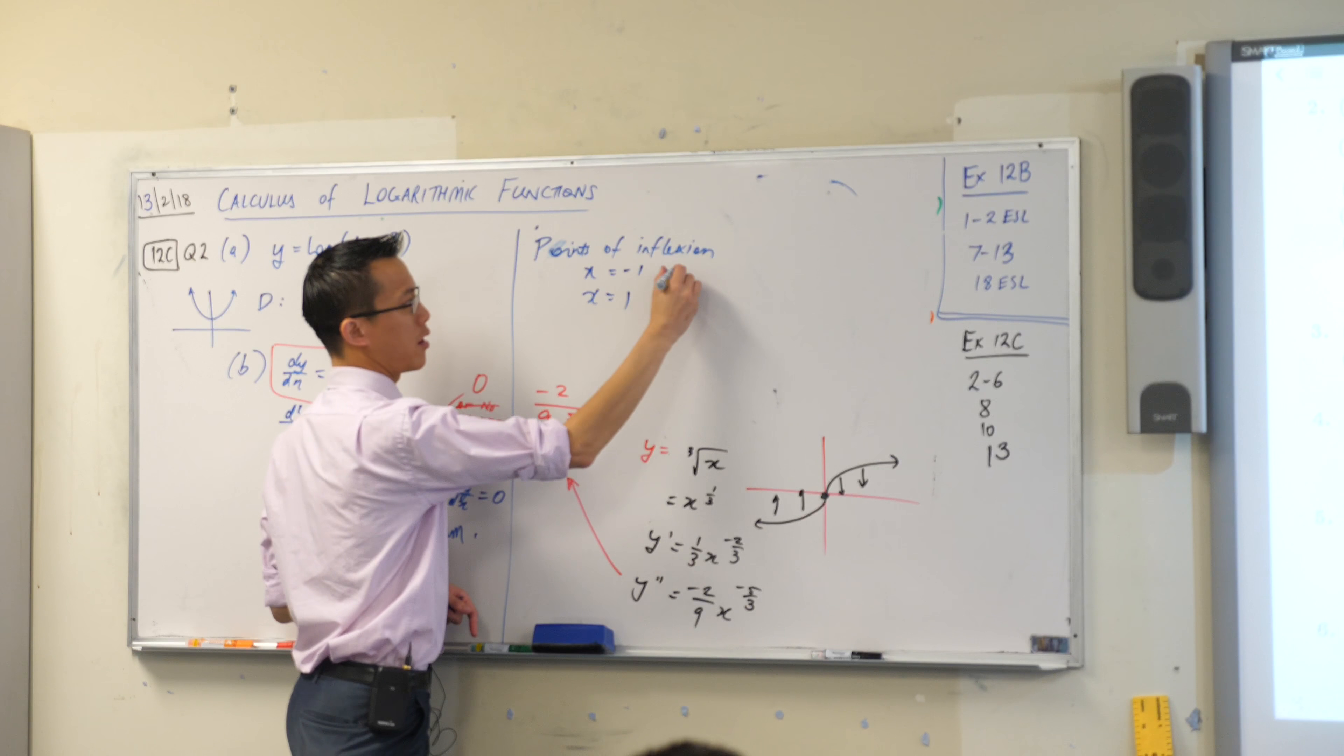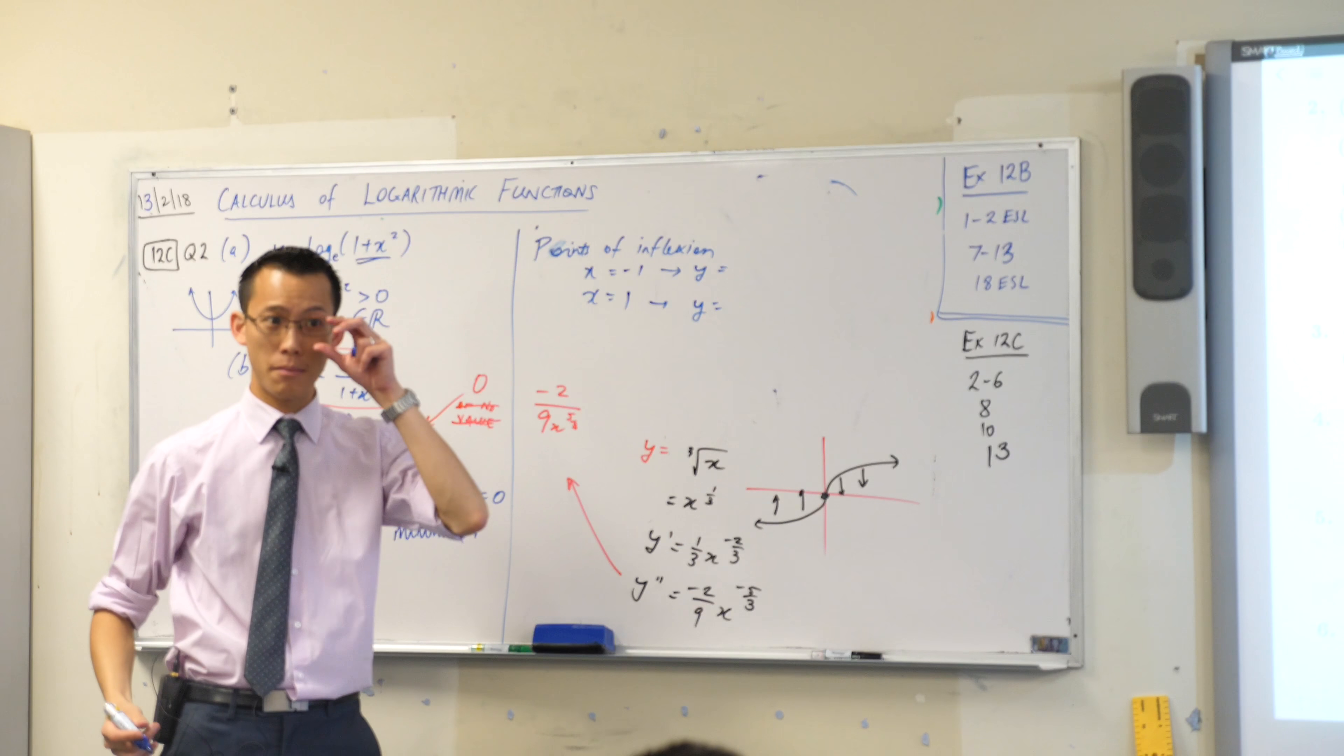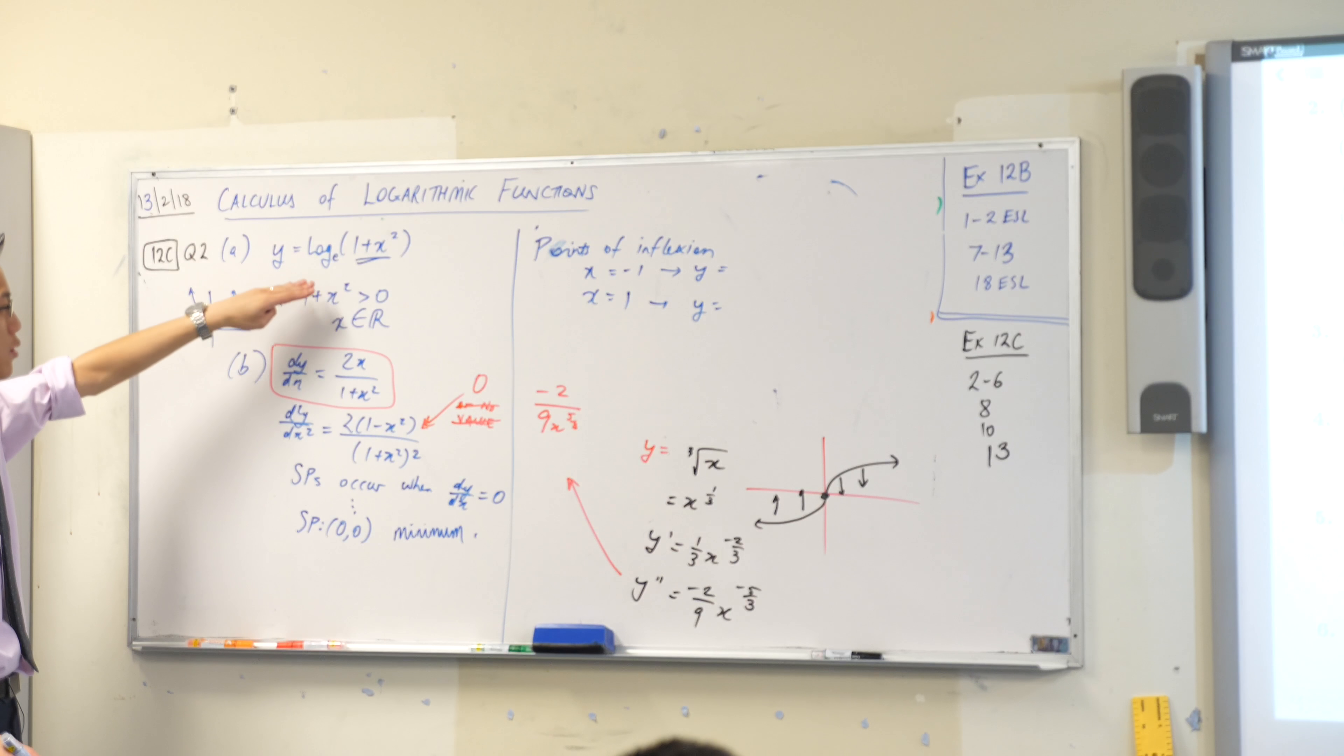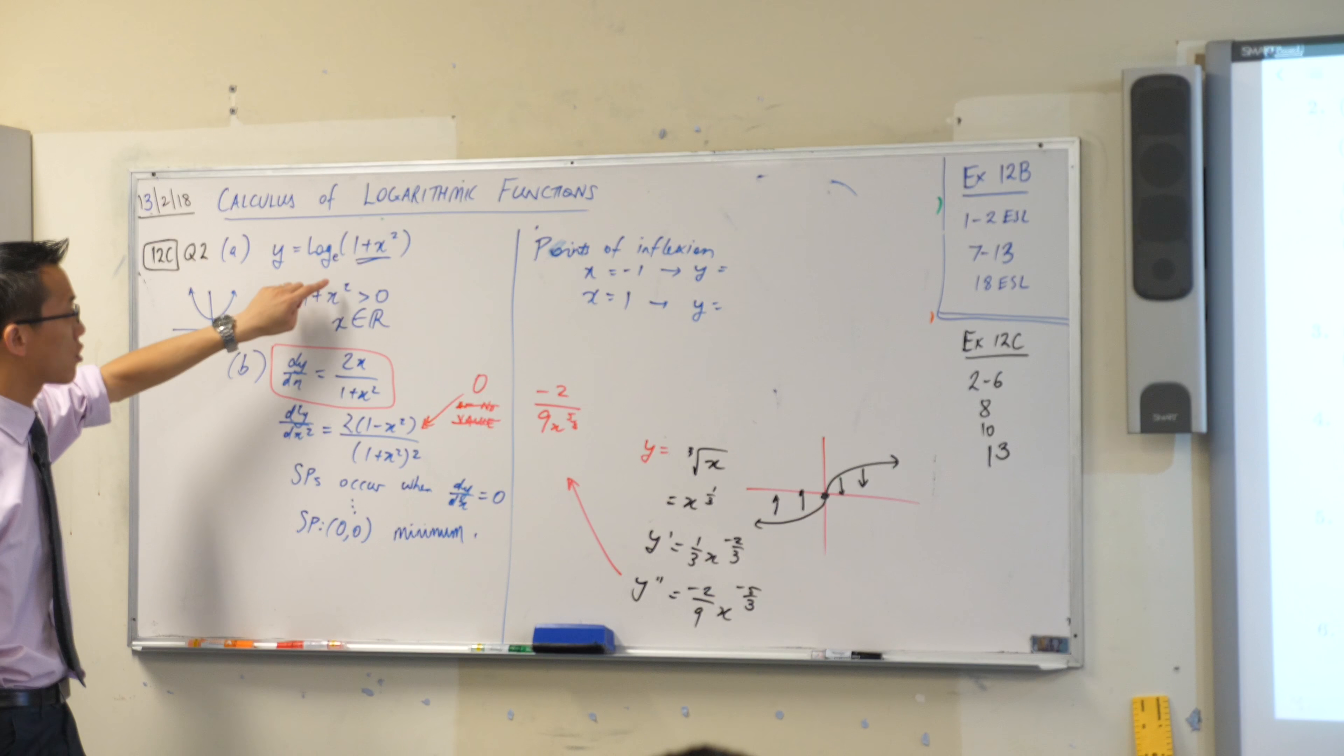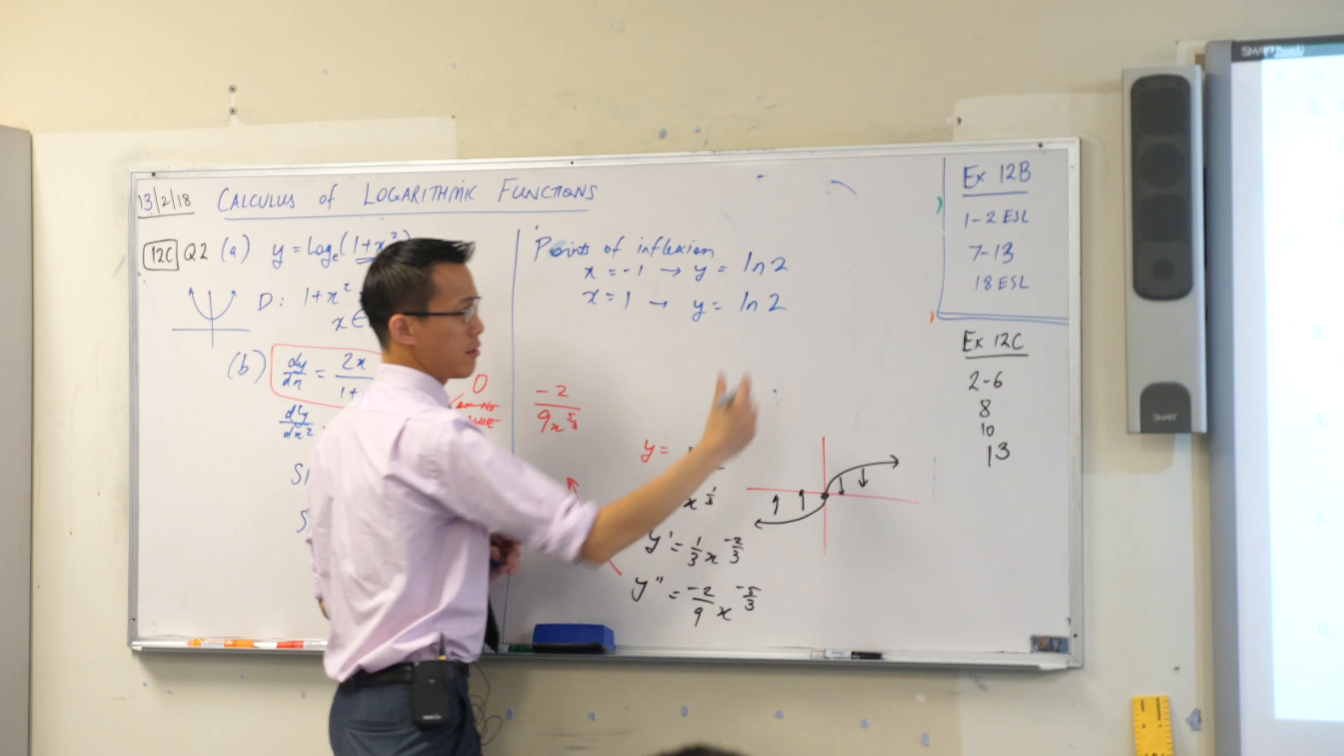When you get negative 1 and 1, what y values do you get for them? Have you found them already? Has anyone got them? We're going back to this original function. So you put 1 and negative 1 in here. I think you're going to get log 2, right? Is that right? Have I done that in my head?